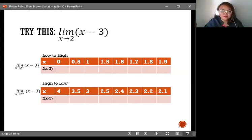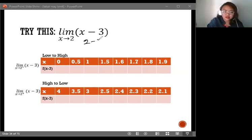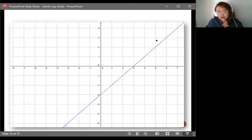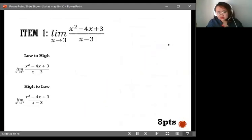If you will substitute here, you'll get 2 minus 3, and the result is negative 1. This is the same as the value that we got when we solved this using tables and graphs. And that's very easy, right? But what if we solved this one?